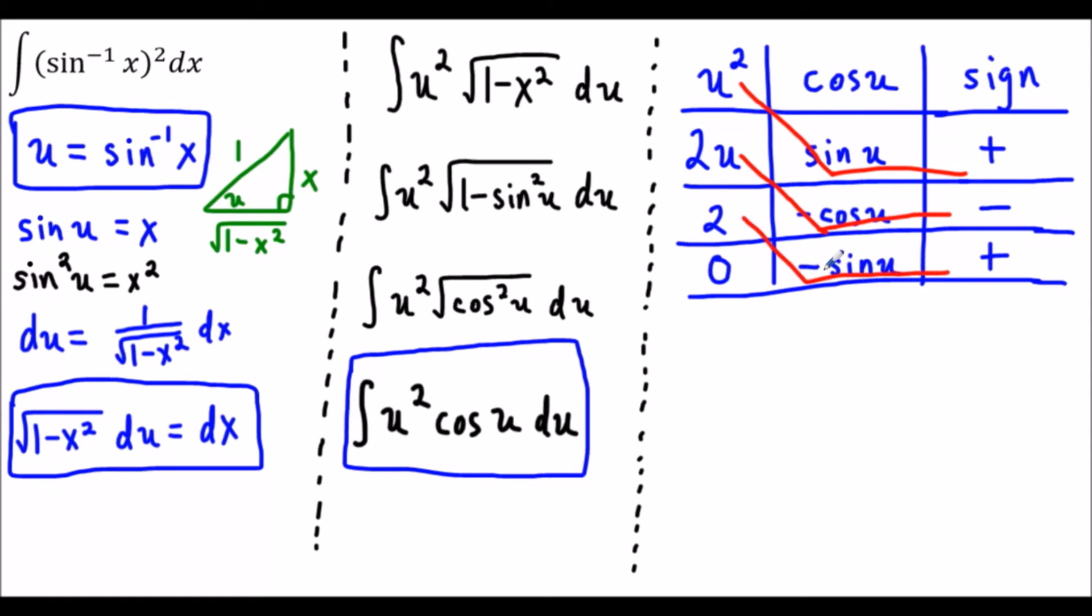What this is going to tell us is that our integral we multiply the terms on the string. We're going to have u squared times sine u and the plus sign tells us to keep the sign the same. The next product is 2u times negative cosine u which will be negative 2u cosine u. The minus at the end tells us to change this so we're going to change it to positive.